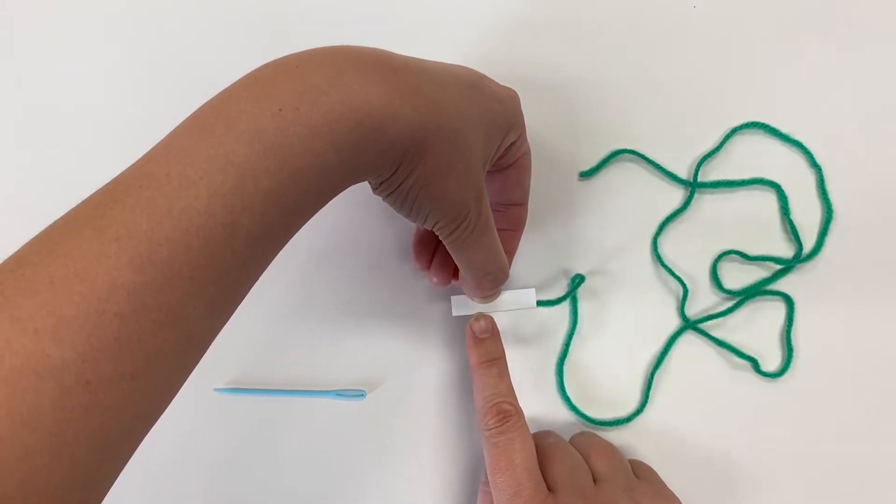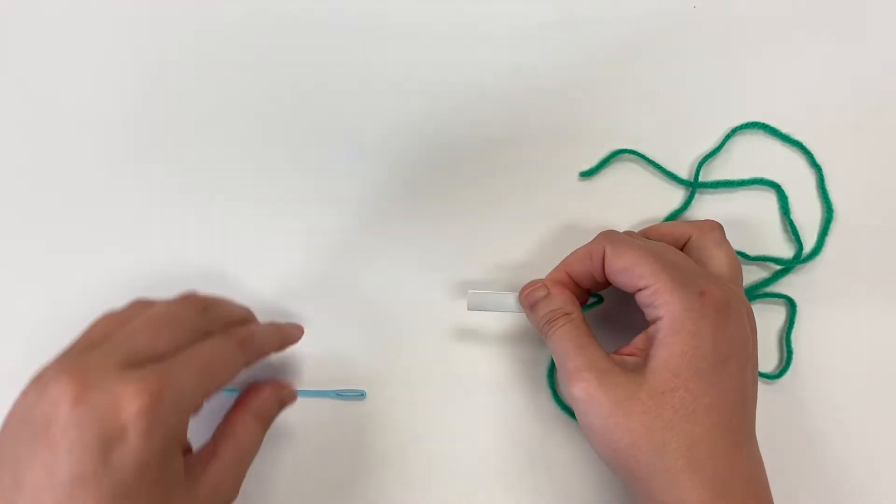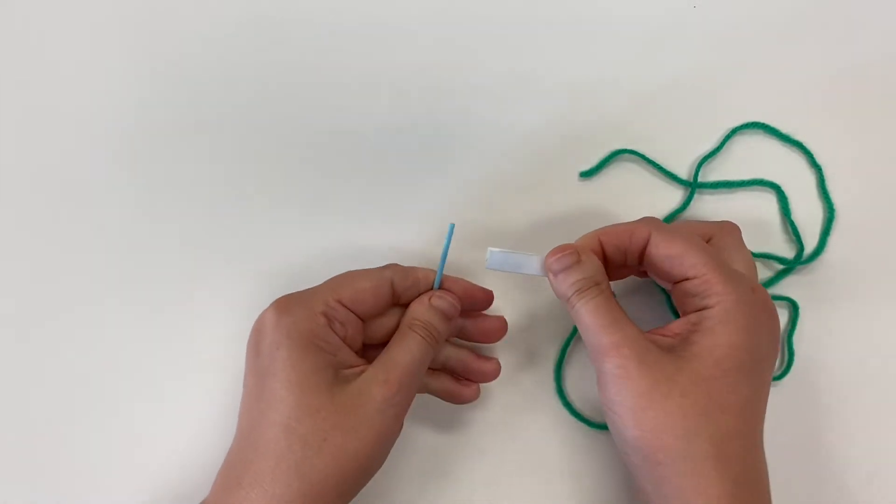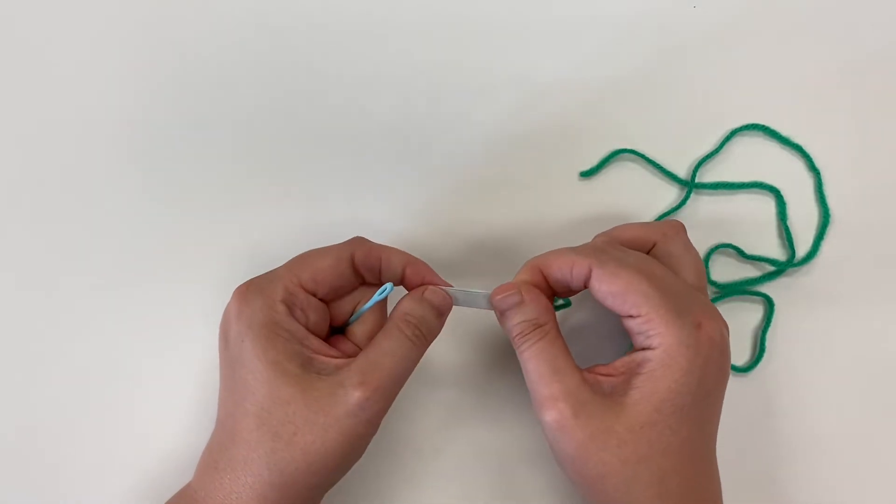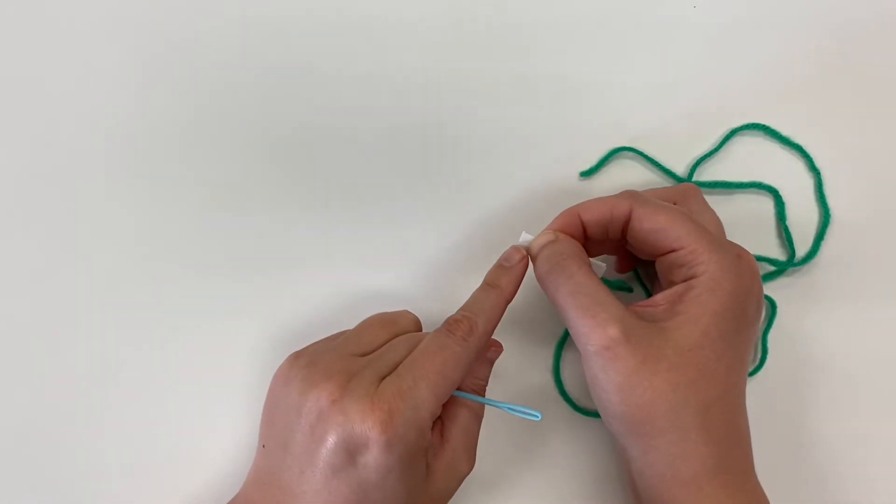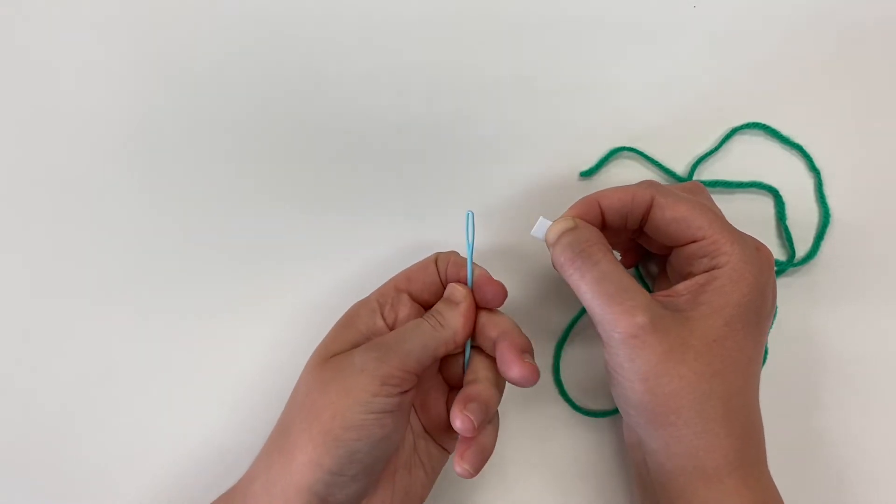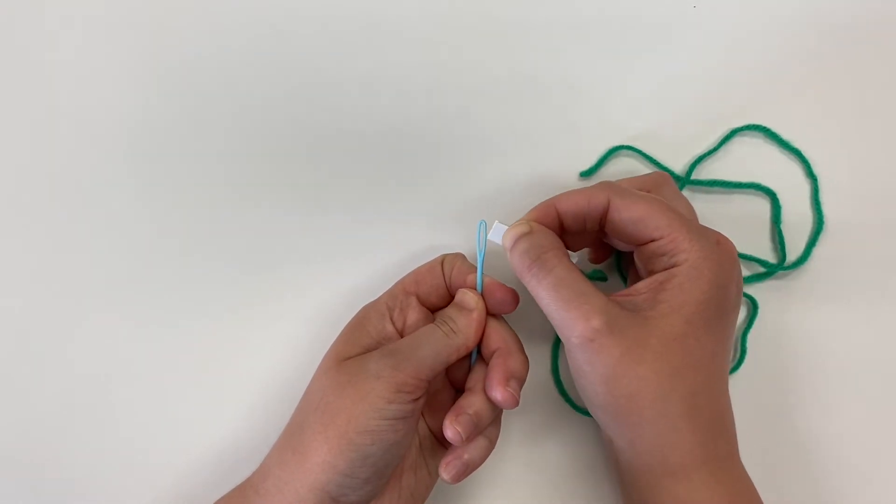Once you have your yarn inside the hot dog bun, you're going to hold on to it. You don't want to hold on to it far back because that makes it difficult to control. You're going to want to pinch that hot dog bun really close to the front and then look for the hole in your needle.